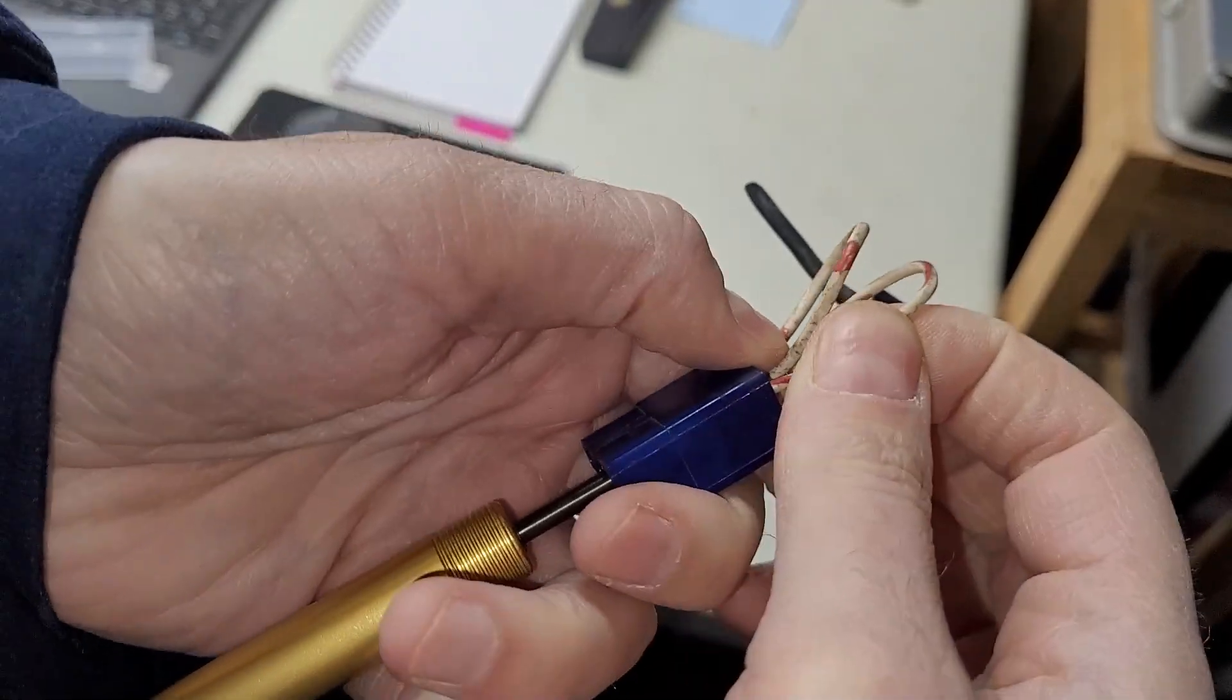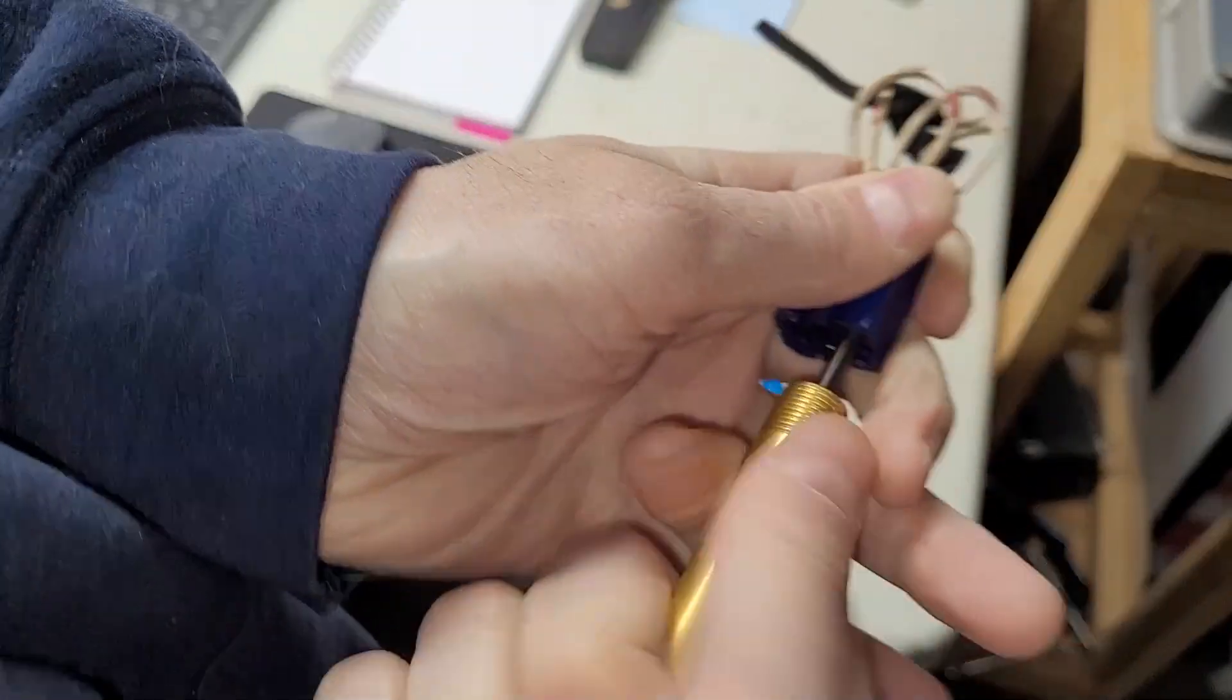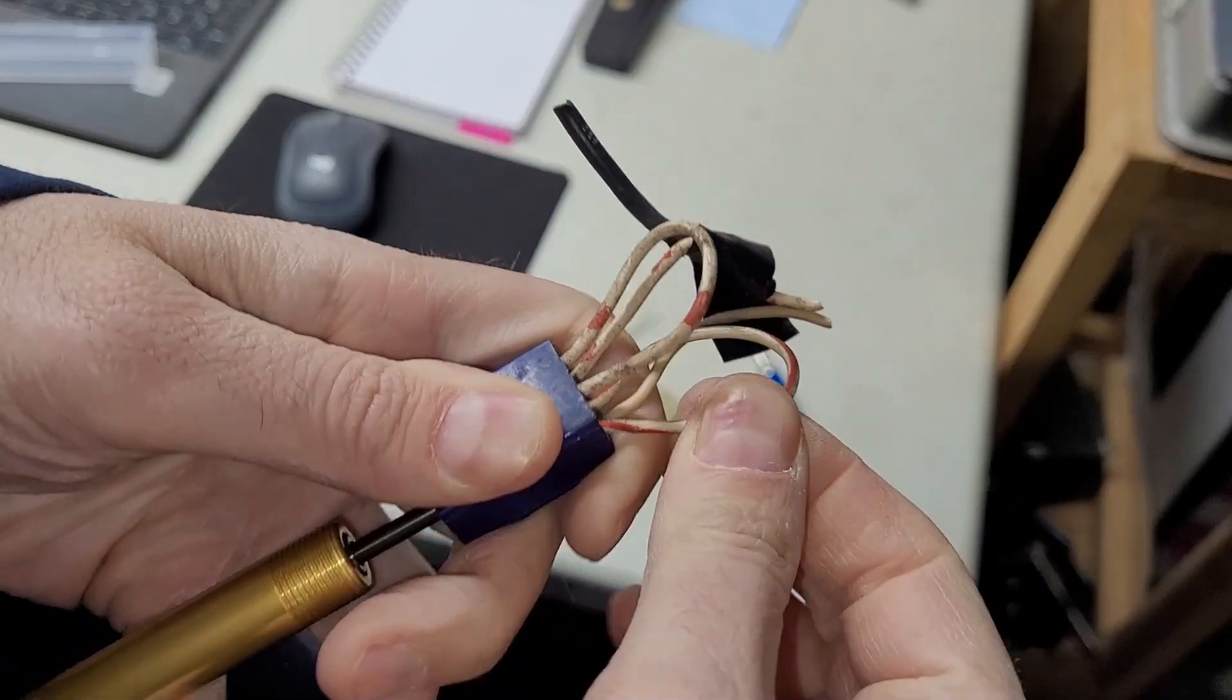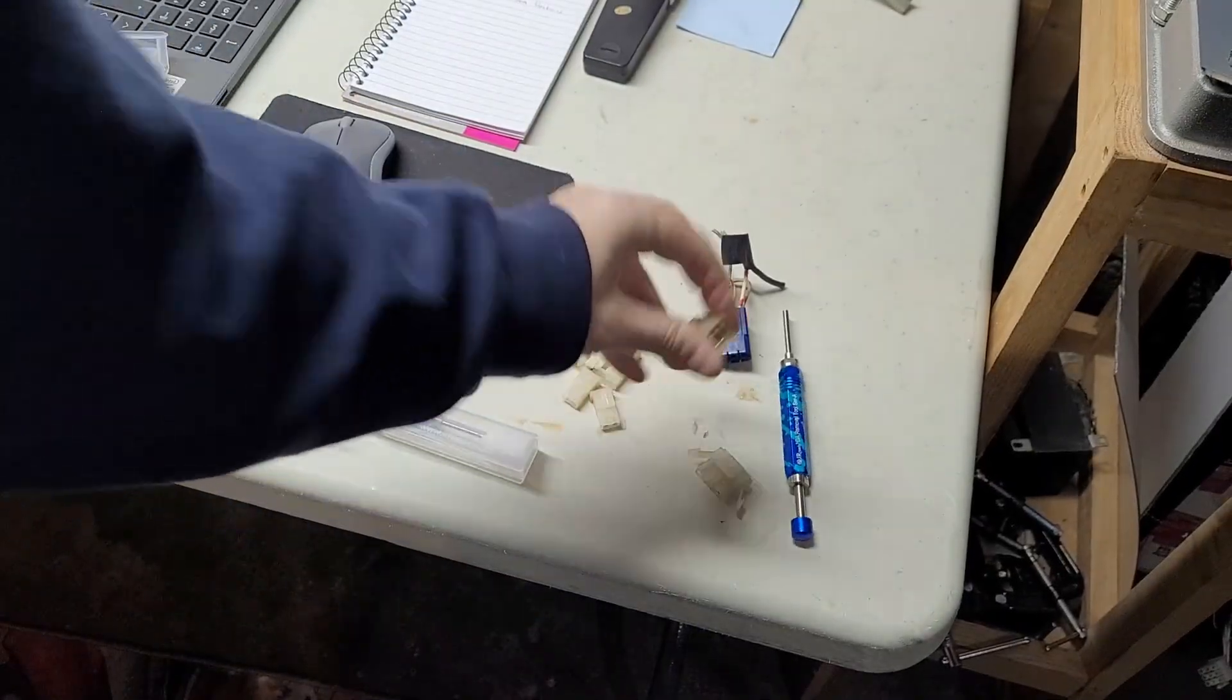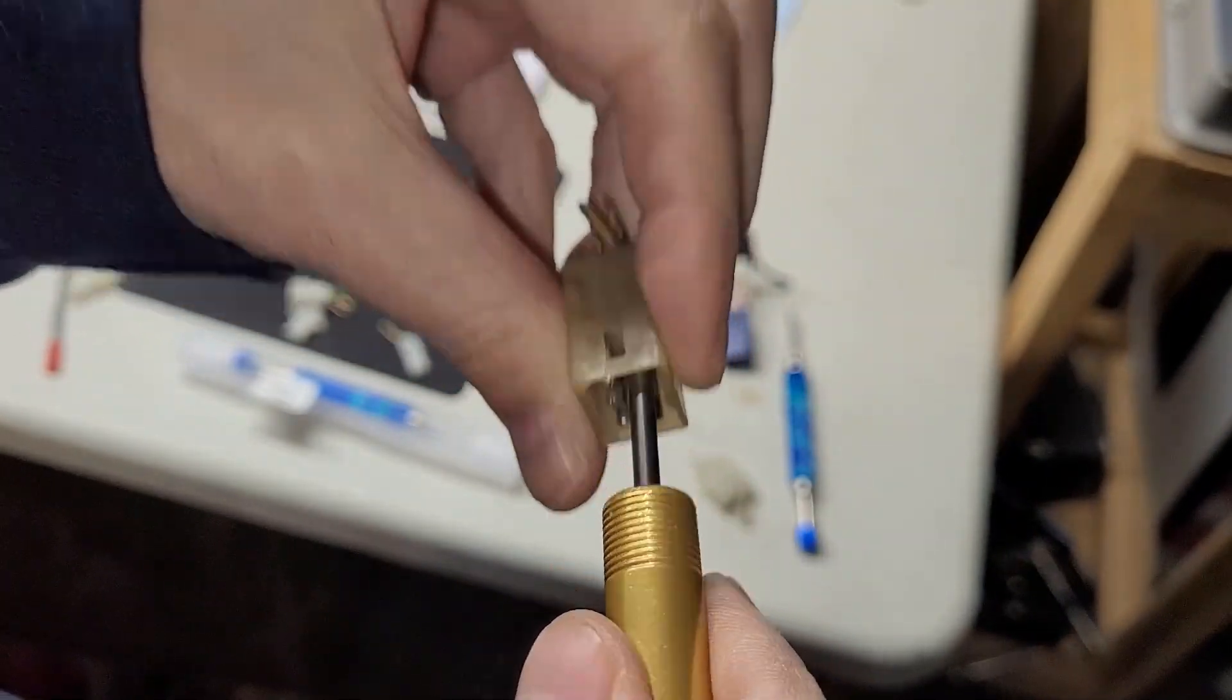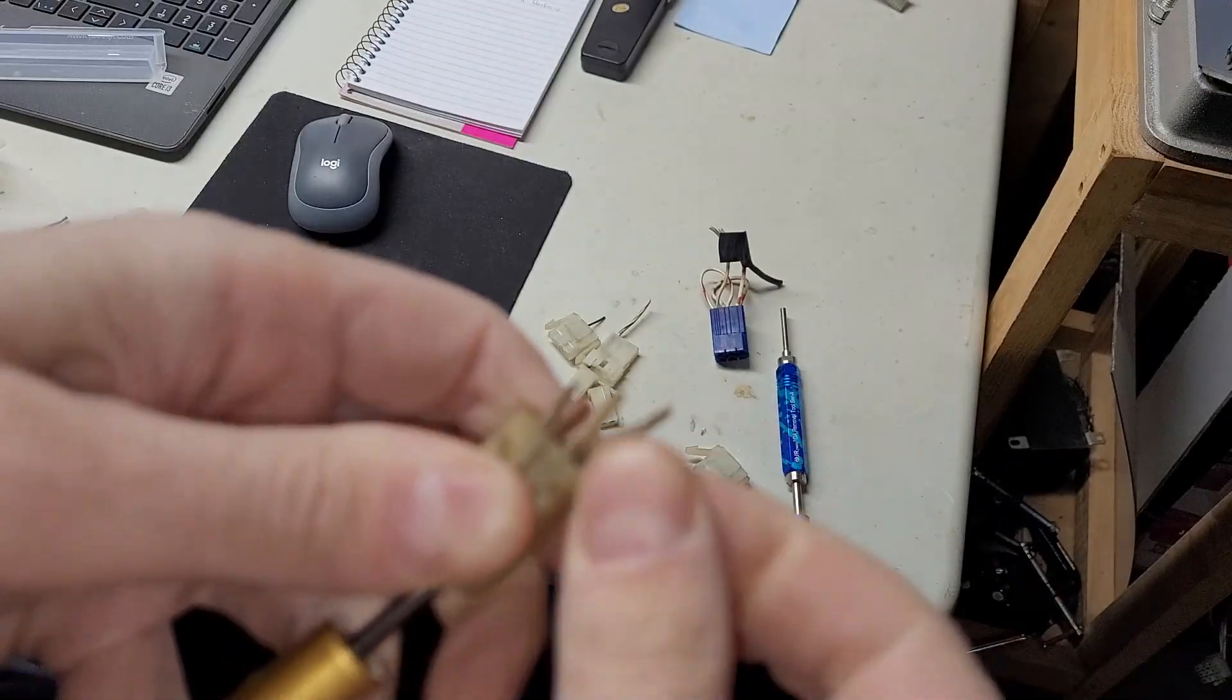I'm starting off with the female. I'm gonna say 0.93 and stop saying 0.093 to save myself two syllables. So I've always had trouble with these connectors, even with this proper Molex tool.